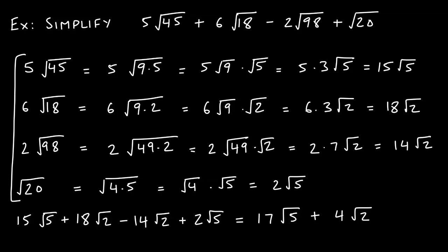For something like this, it's easy to get overwhelmed by everything on screen. The best advice is to take a note card, hide the part you haven't reached yet, and go step by step. This is not a bad problem as long as you follow the rules. We'll simplify 5 radical 45 by itself first, then come back to the rest.